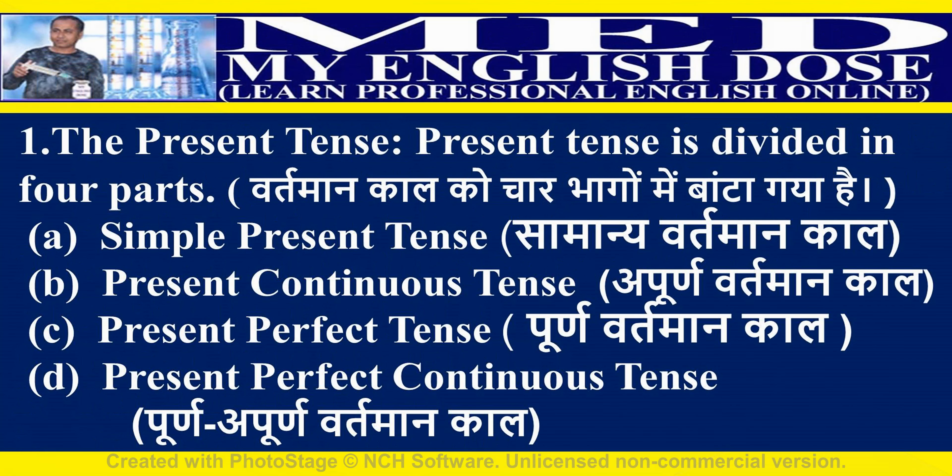Present tense is divided into four parts. Number one: simple present tense. Number two: present continuous tense. Number three: present perfect tense. Number four: present perfect continuous tense.